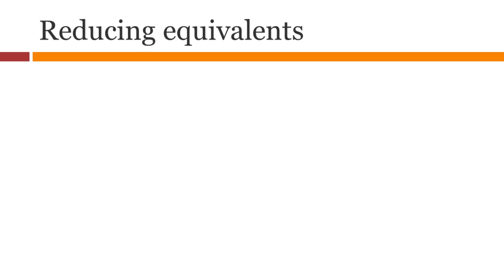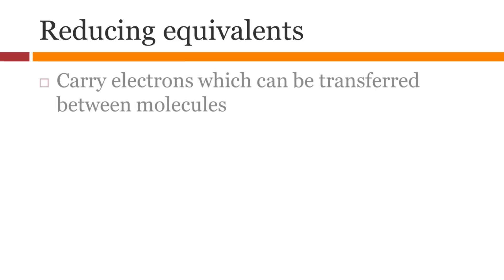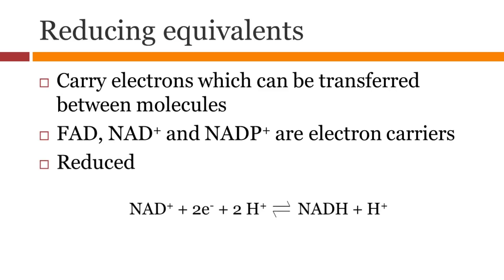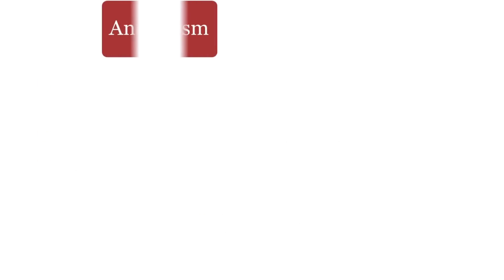Reducing equivalents are molecules which carry electrons and transfer them from one molecule to another. Good examples in our body are FAD, NAD+, and NADP+. Here are the reactions. You have already seen this flowchart before, but let's add more details to it.